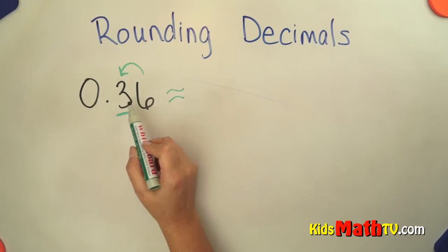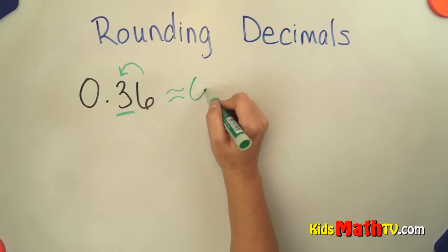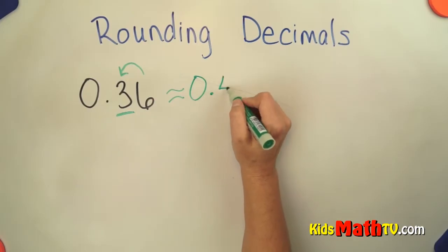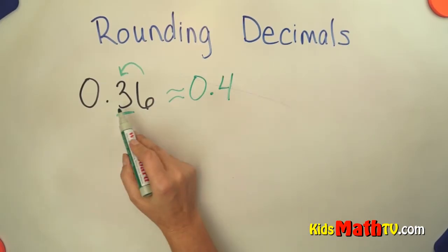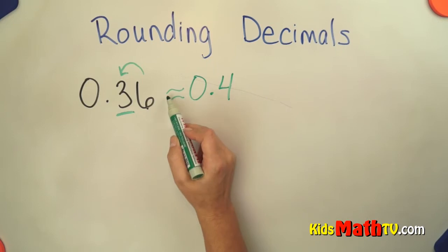Because this is actually closer to 4 tenths than it is to 3 tenths. So our answer is 0 and 4 tenths. So 36 hundredths rounds to 4 tenths.